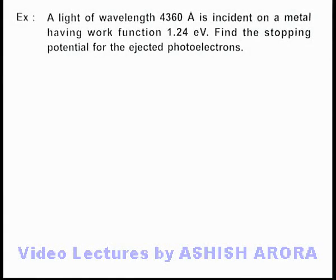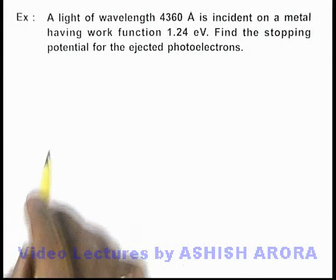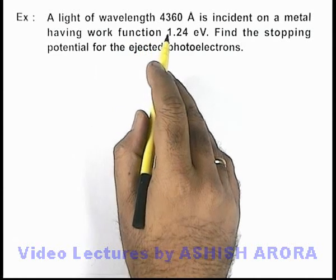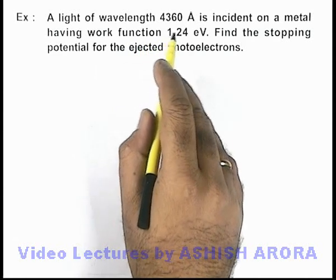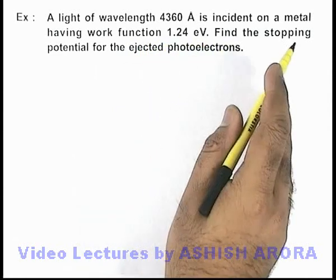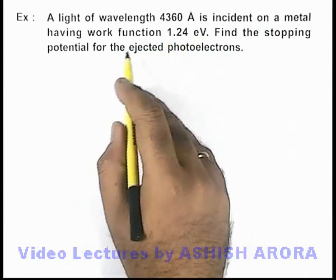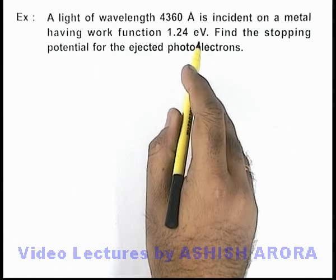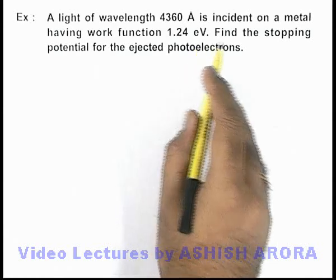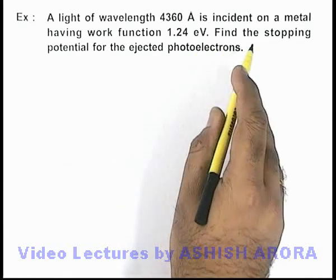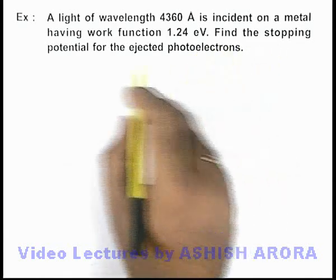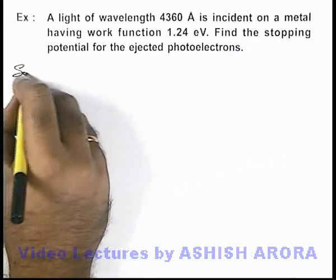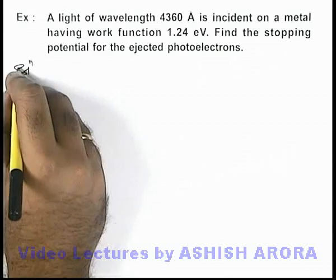In this example, a light of wavelength 4360 angstrom is incident on a metal having work function 1.24 electron volt. Here we are required to find the stopping potential for the ejected photoelectrons.